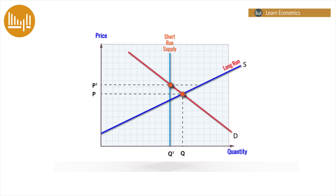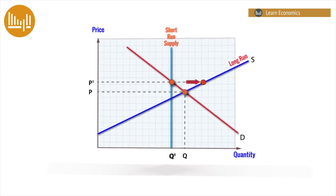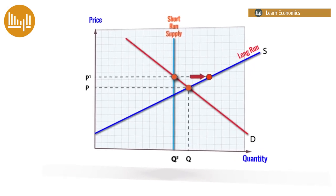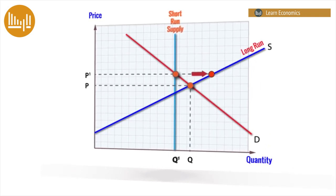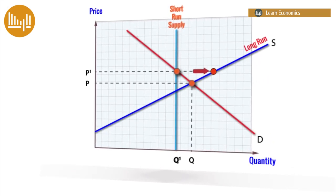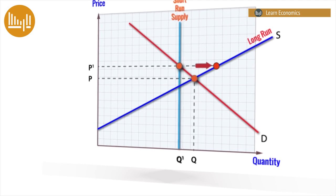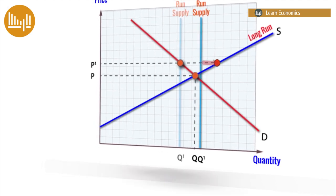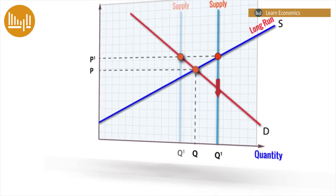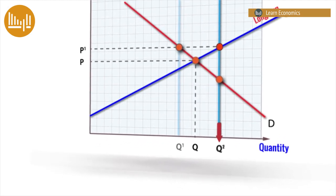At this high price, farmers and growers plan to produce more in the following year, indicated by the long-run supply curve. If we assume no more shocks, this will trigger a period of price instability. In the second year, short-run supply has increased; however, the effect of this is to depress price to P2.